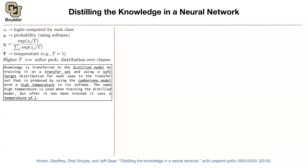From the giant model, you generate a transfer set — the data generated by the giant network. Then you train the distilled model with a soft target distribution, using a larger temperature. Why? Because this is artificial data, so we don't want to trust the large network too much. You increase the temperature, generate your transfer set, and train the distilled model with the same temperature used to generate the data. Once training is done and you want to do actual prediction in production, you set the temperature back to one.